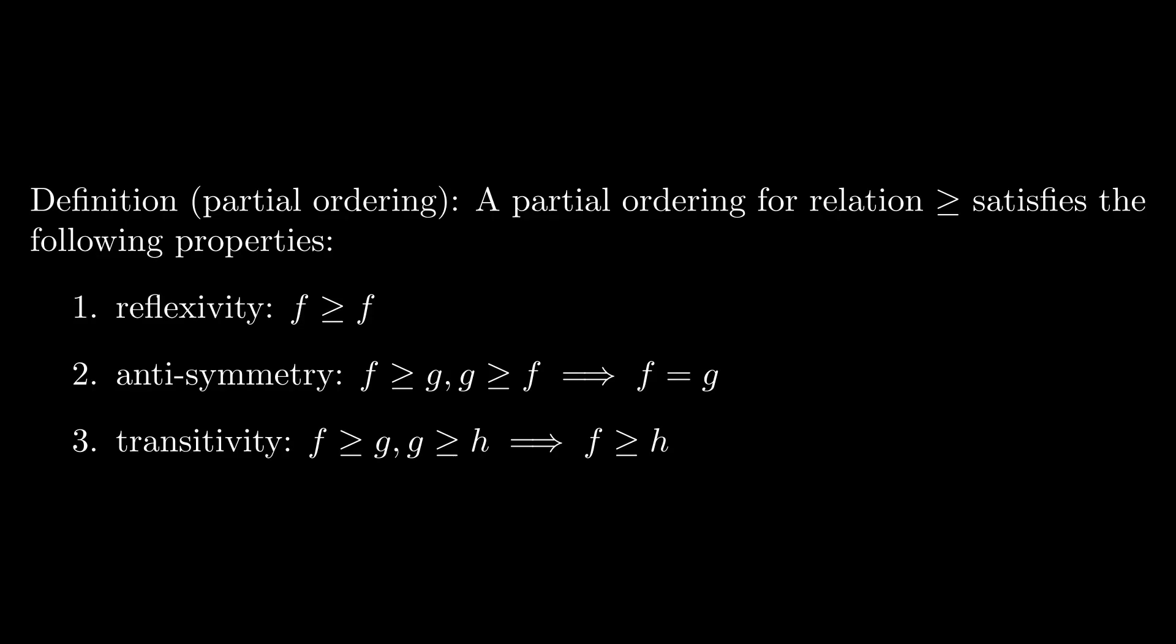In the context of Big O notation, this means that f equals O(f), f equals O(g) and g equals O(f) if and only if f and g are asymptotically equivalent. And lastly, if f equals O(g) and g equals O(h), then f equals O(h).